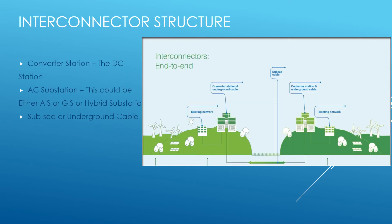Our next slide covers interconnector structure. This shows a typical structure of an interconnector between two countries. As you can see on the screen, the interconnector has a very high voltage cable between the two countries. In this case it's a subsea cable. On either side of the country there is a converter station, also called a DC station, an AC substation which could be AIS, GIS, or hybrid, and a subsea cable going below the seabed.